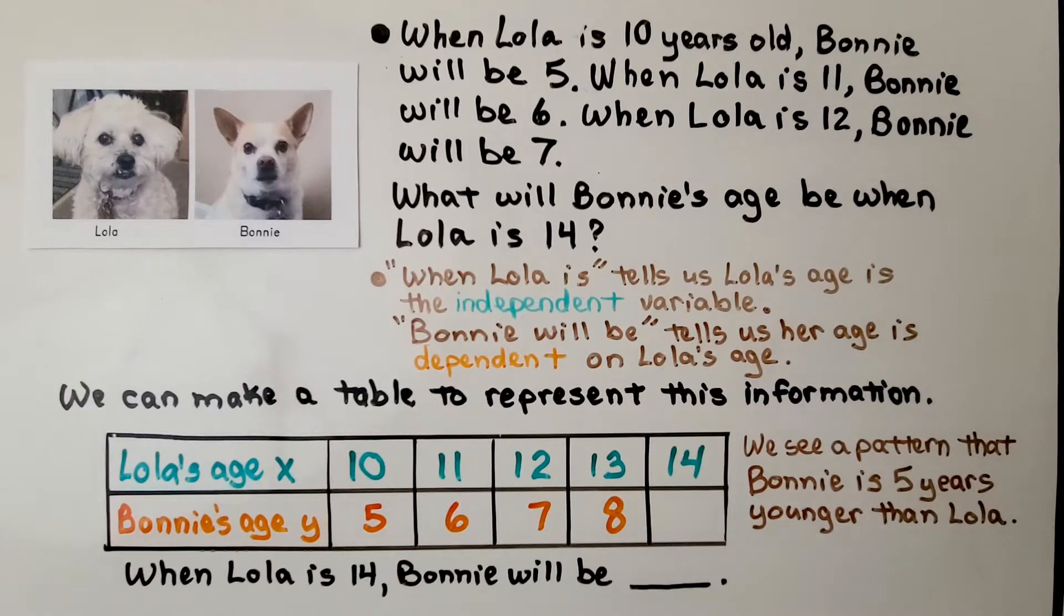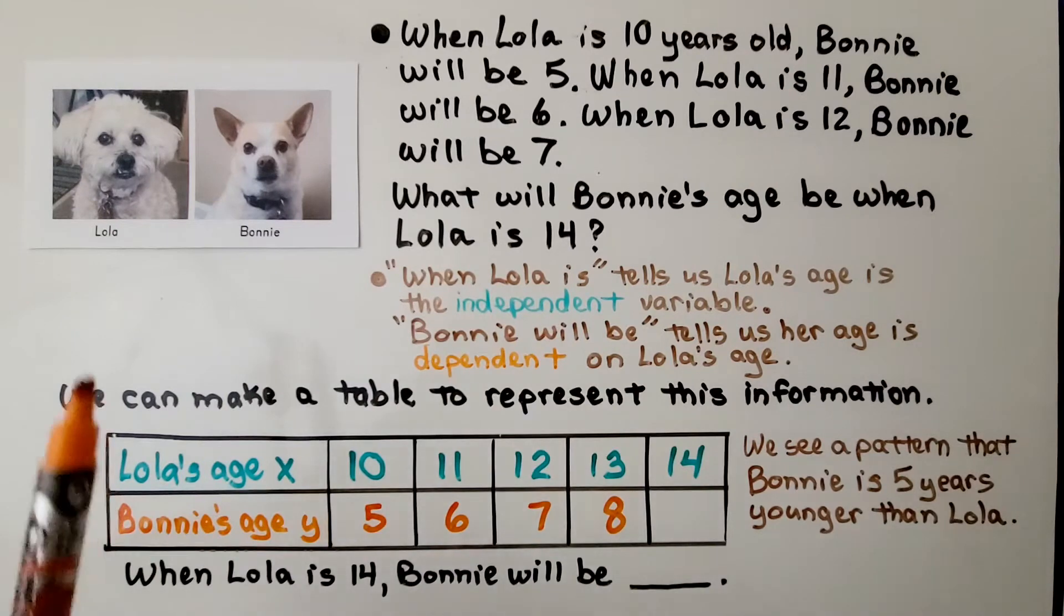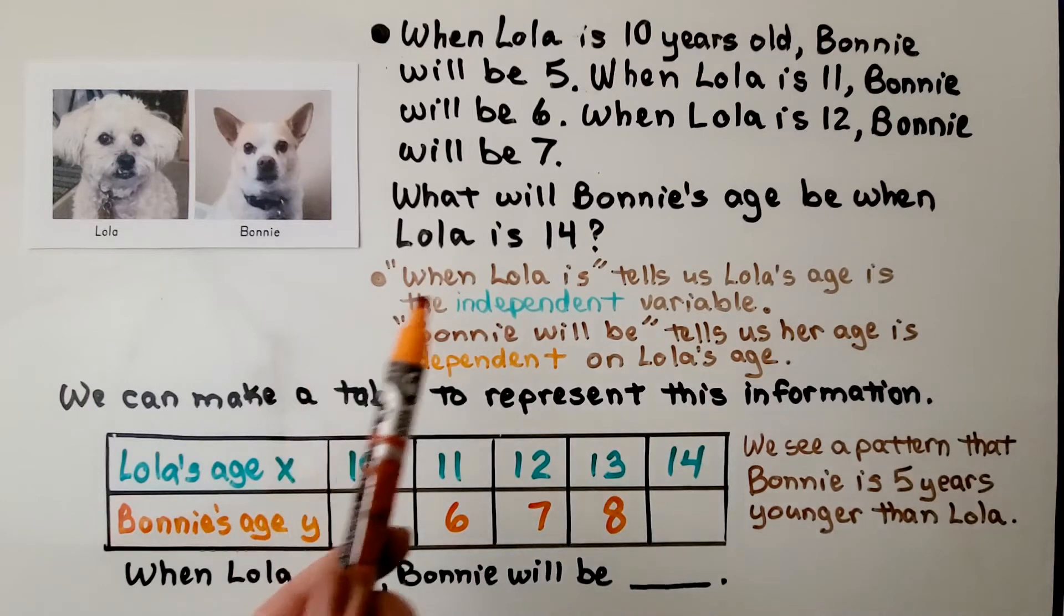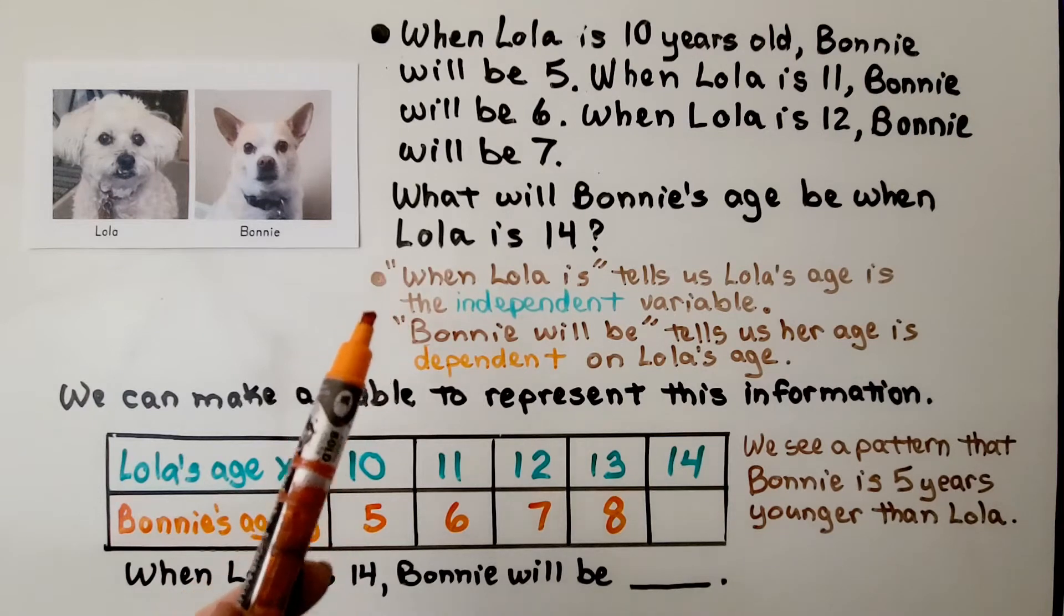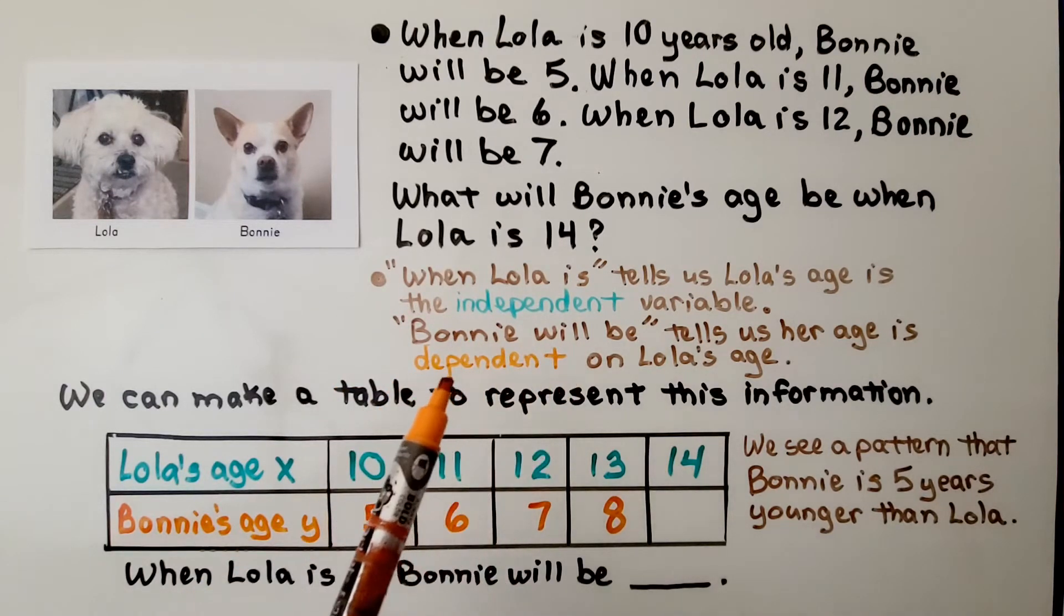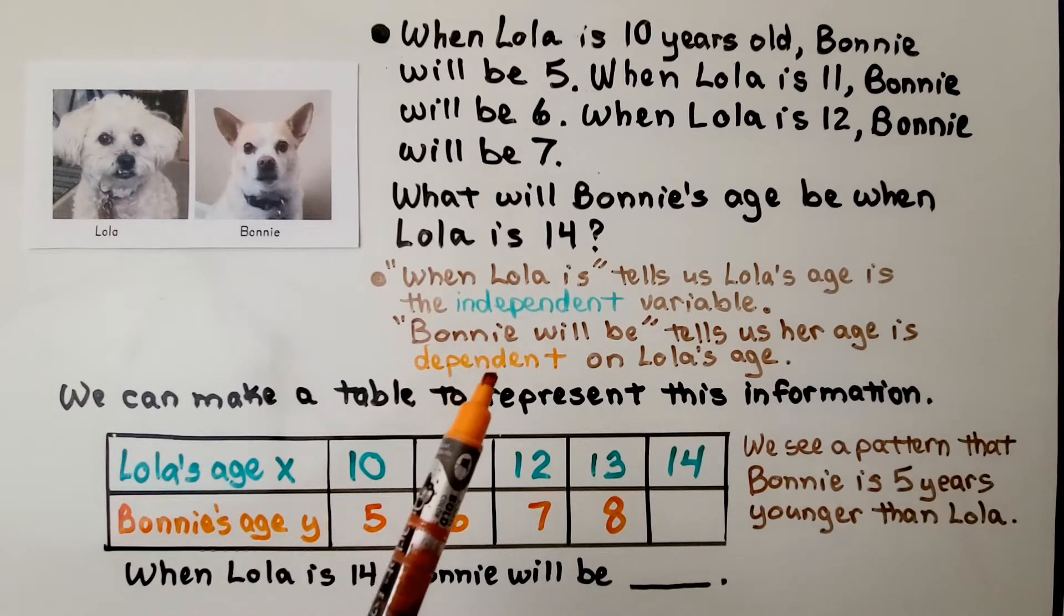Many of you know I have three dogs: Lola, Bonnie, and Betty. Here's Lola and Bonnie. When Lola is 10 years old, Bonnie will be 5. When Lola is 11, Bonnie will be 6. When Lola is 12, Bonnie will be 7. What will Bonnie's age be when Lola is 14? When Lola is tells us Lola's age is the independent variable. Bonnie will be tells us her age is dependent on Lola's, so that's the dependent variable.